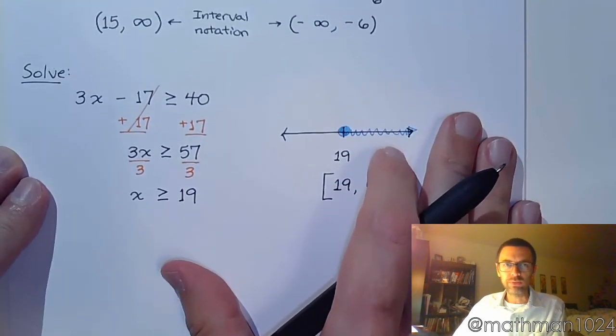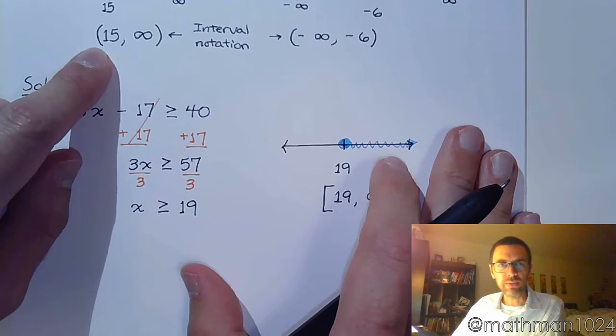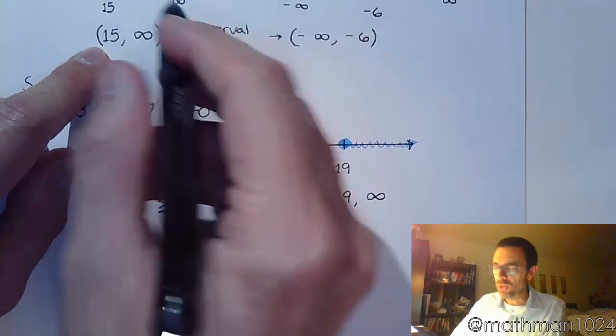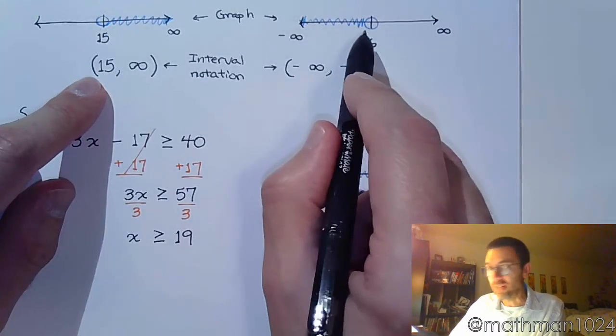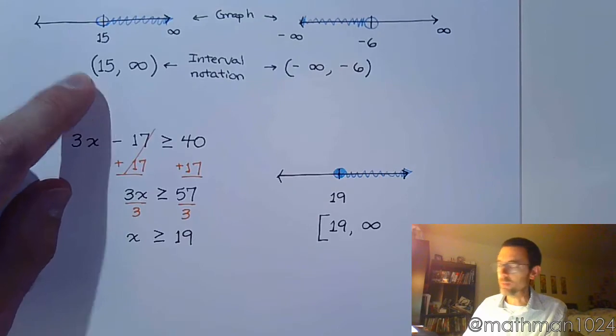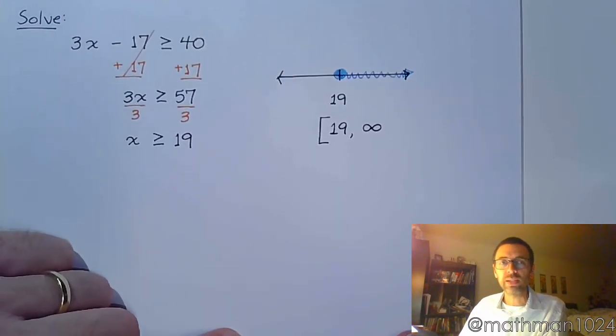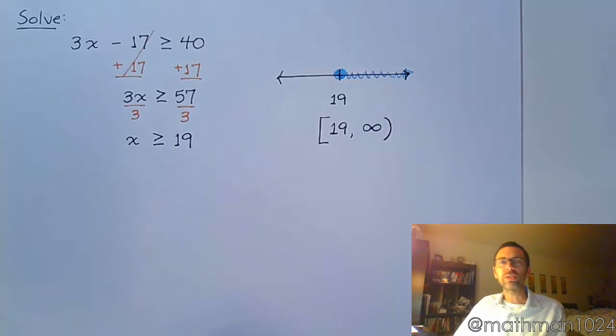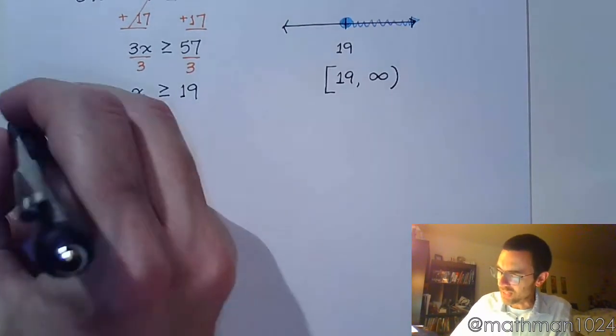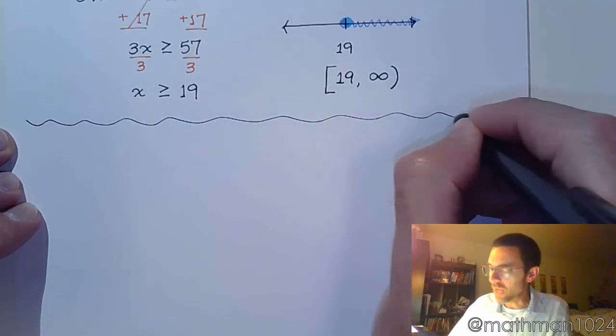And that bracket is going to denote to everybody that we are including 19 in the solution set. Where above, when I had parentheses on the 15 or on the negative 6, that meant that you could get as close to 15 as you wanted to, but you were not including it. Or you could get as close to negative 6 as you wanted to, but still you weren't including it. The bracket says, yes, 19 itself is a solution. And then you put parentheses everywhere else, for the infinity. Because you never get to infinity, so you can never stop and say I'm including you and you're part of the solution set.